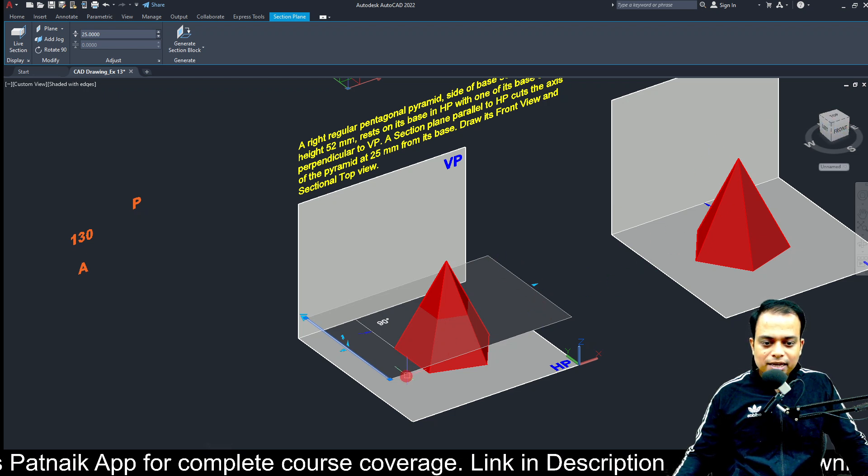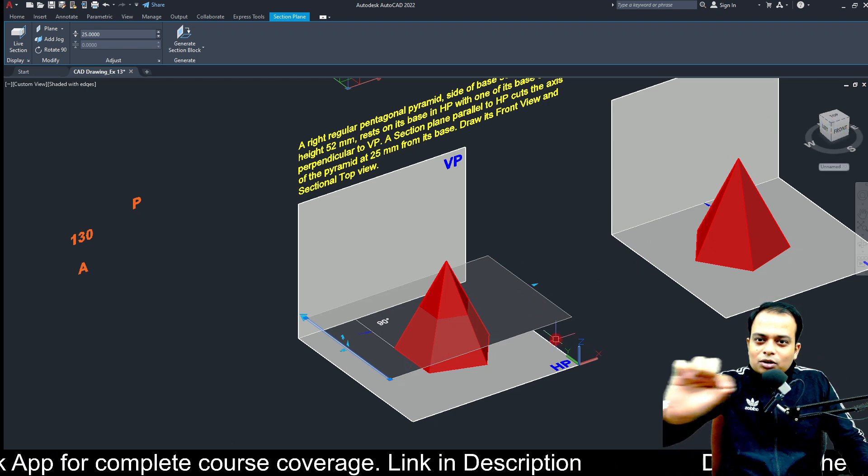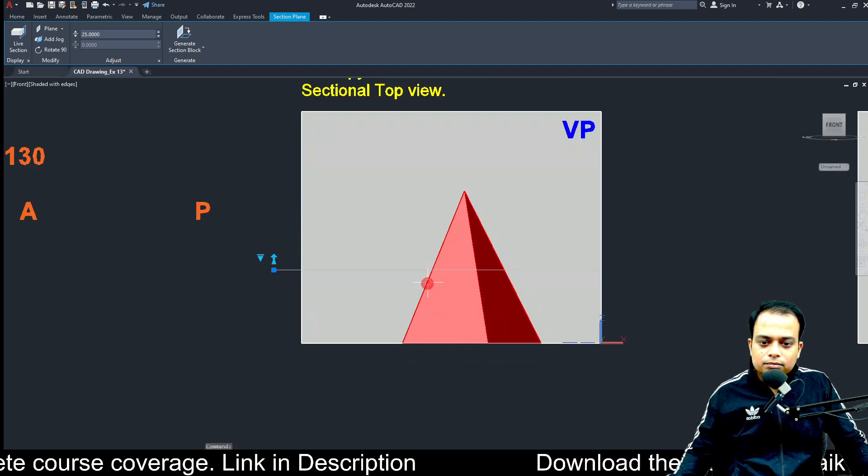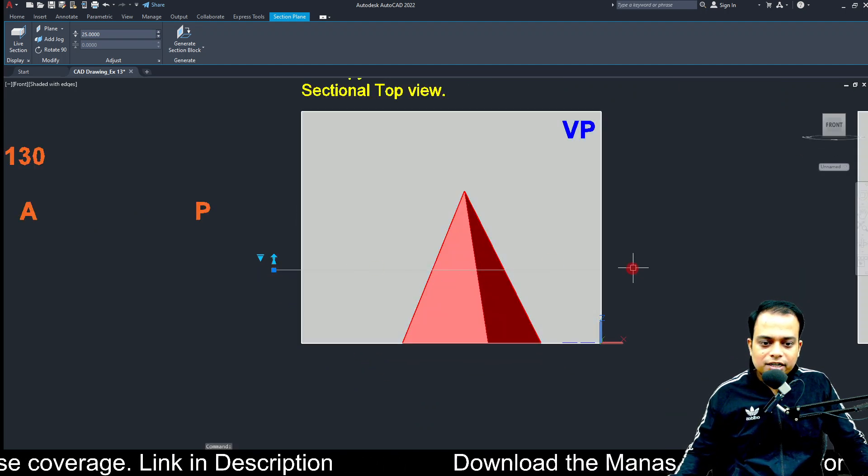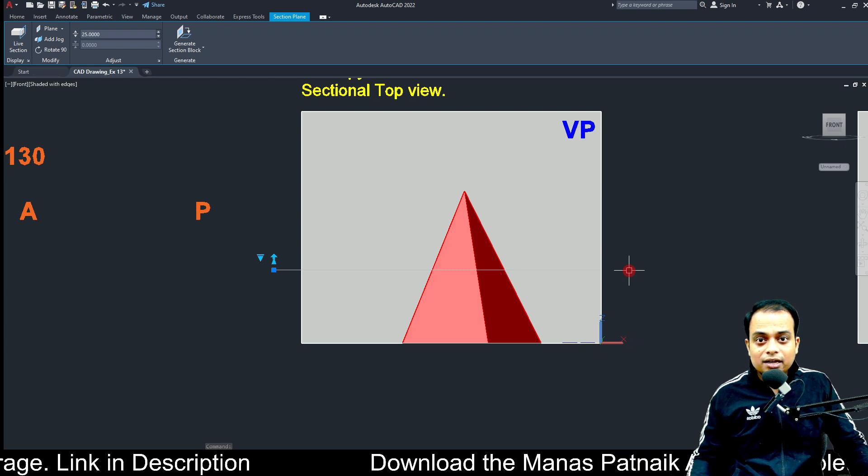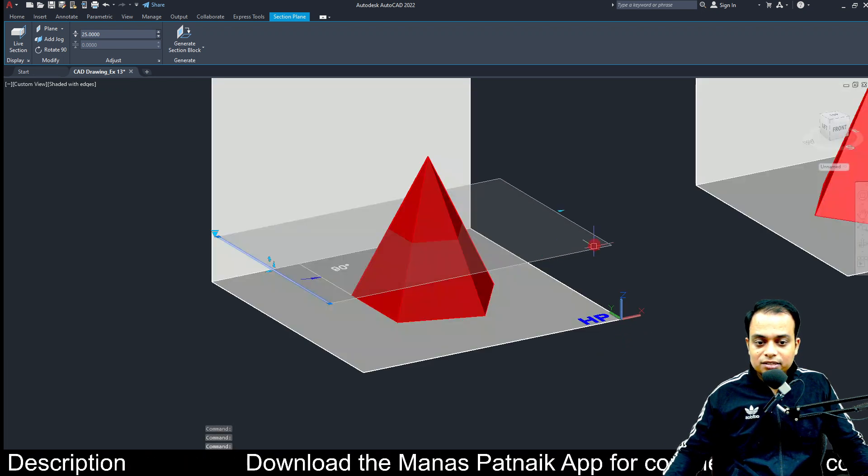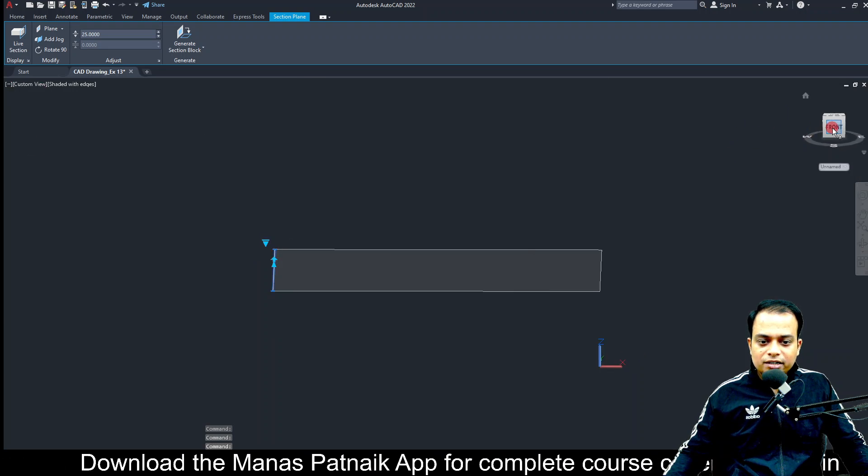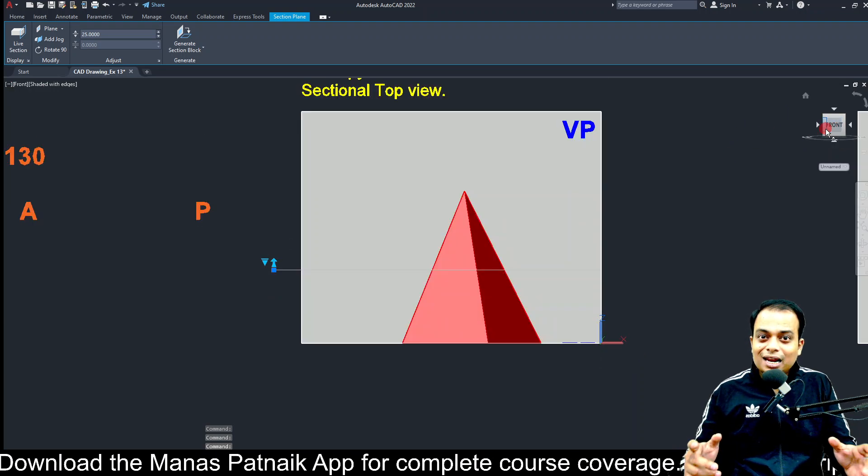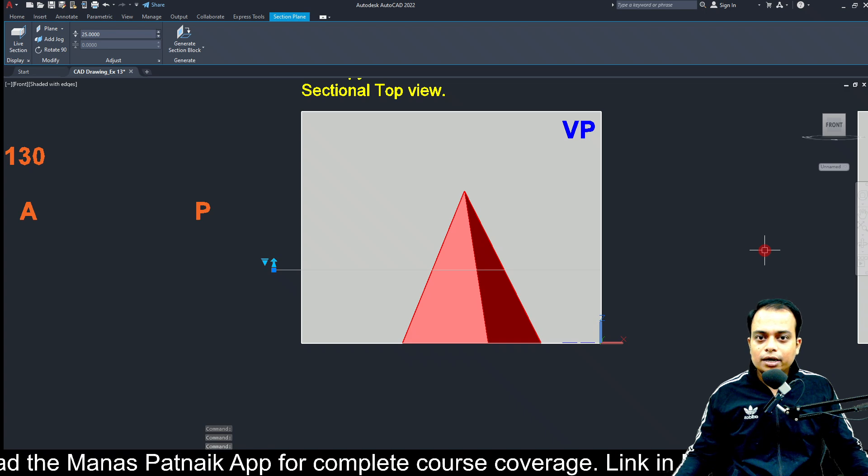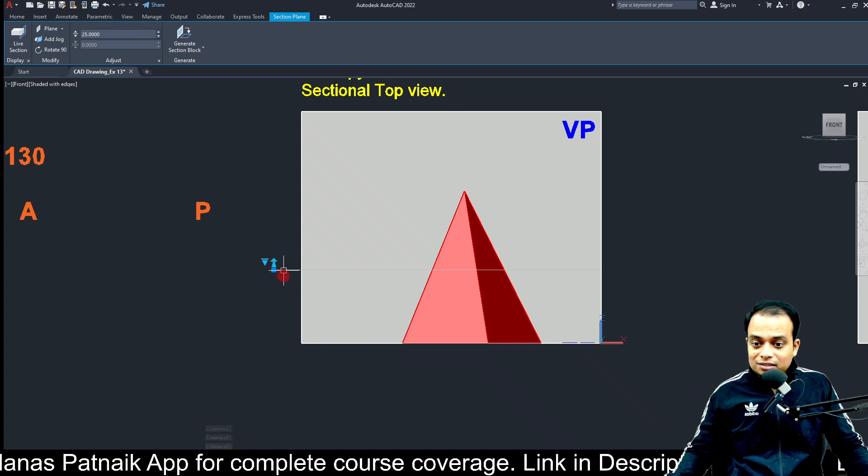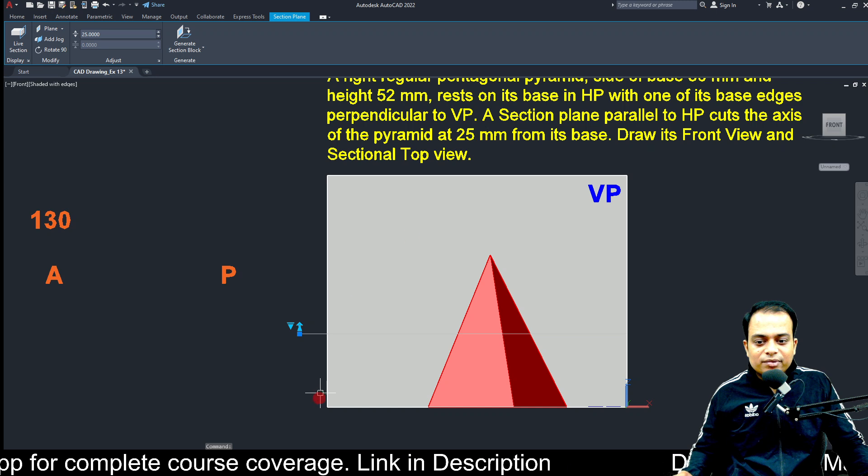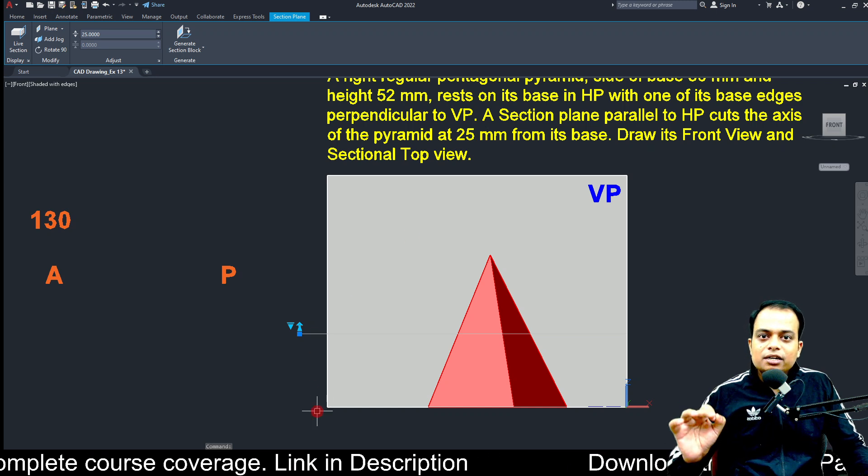Let me switch off the live section for a while. If you take a look at the front view, this cutting plane looks like a horizontal line in the front view. This is the original cutting plane. If you look at the object from the front, it looks or converges like a line. So in the front view you have to make a line, and this line has to be made at a height of 25 millimeters.